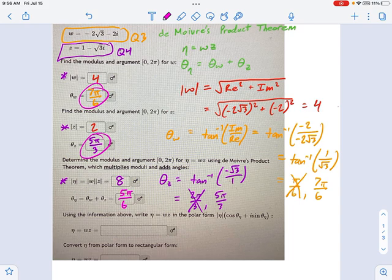And now I can quickly write eta, which is the product of these two complex numbers, in polar form. I take the radius, or in other words, the magnitude, that's 8, and then it's cosine of this angle I just found, 5 pi over 6, plus i times sine of 5 pi over 6. If you're wondering where I got that, that's right here. That's the polar form.